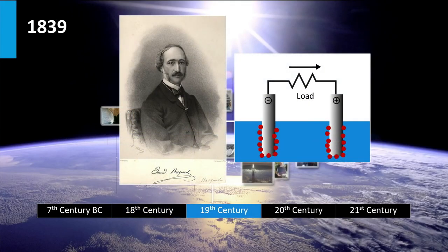In 1839 the scientist Edmund Becquerel, at an age of 19 years, discovered the photovoltaic effect. The photovoltaic effect is the generation of voltage or current in a material when exposed to light. He observed this effect in an electrolytic cell. The cell was made out of two platinum electrodes placed in an electrolyte. An electrolyte is an electrically conducting solution, and in this case he used silver chloride placed in an acidic solution.